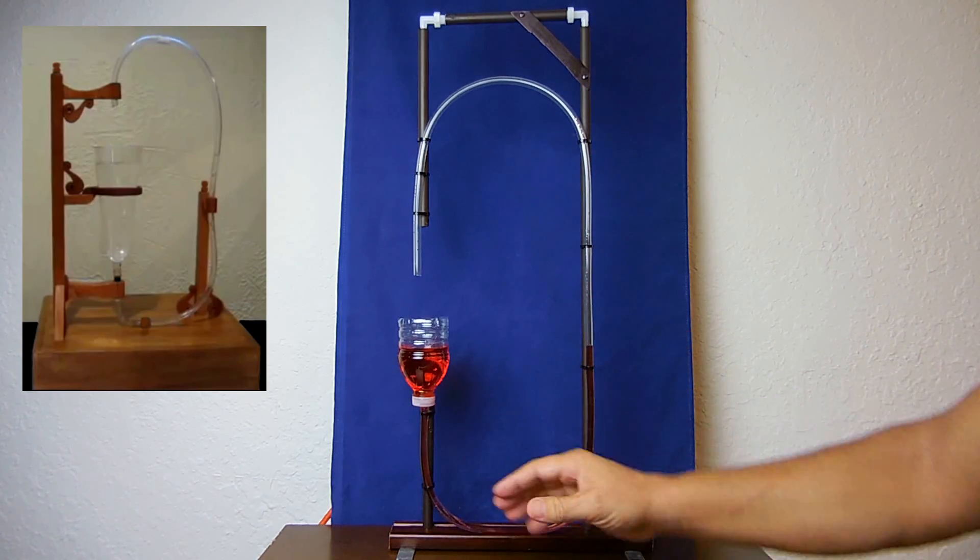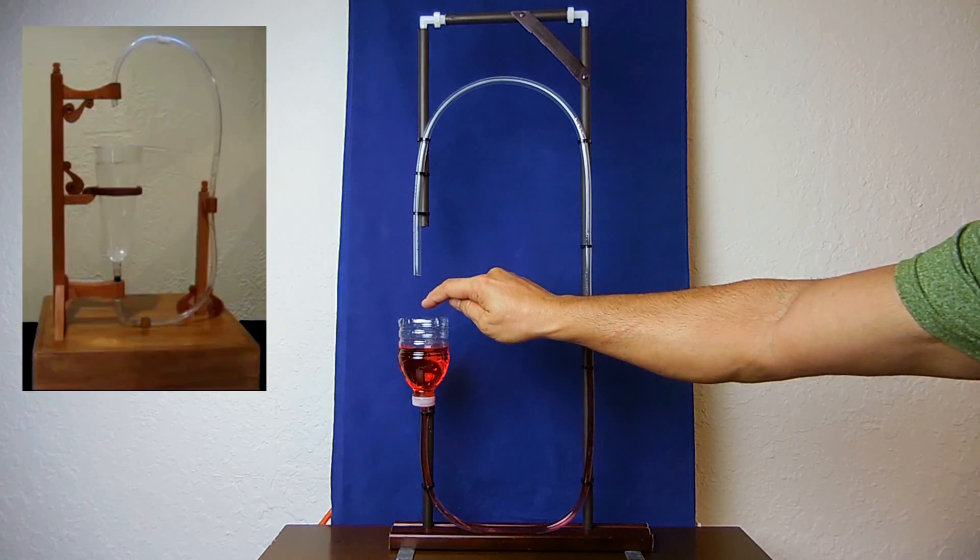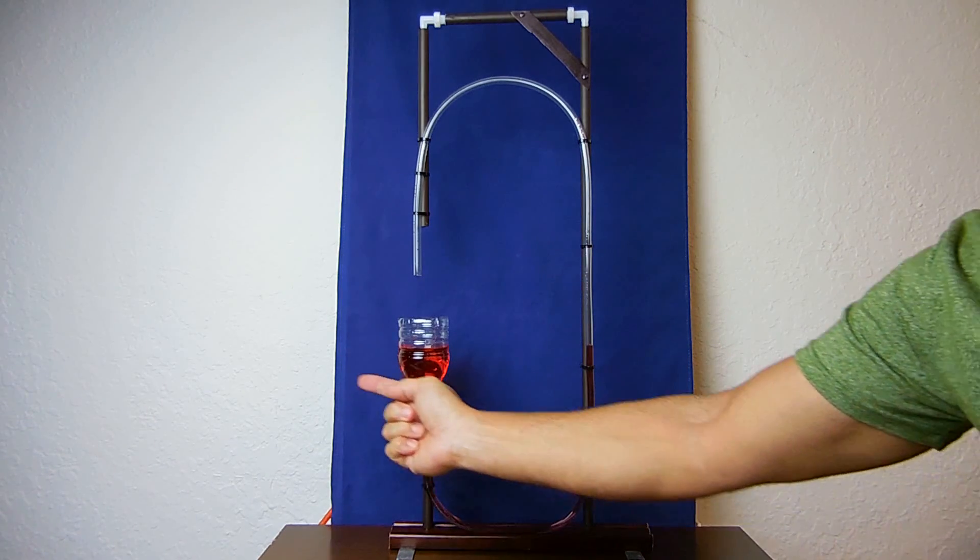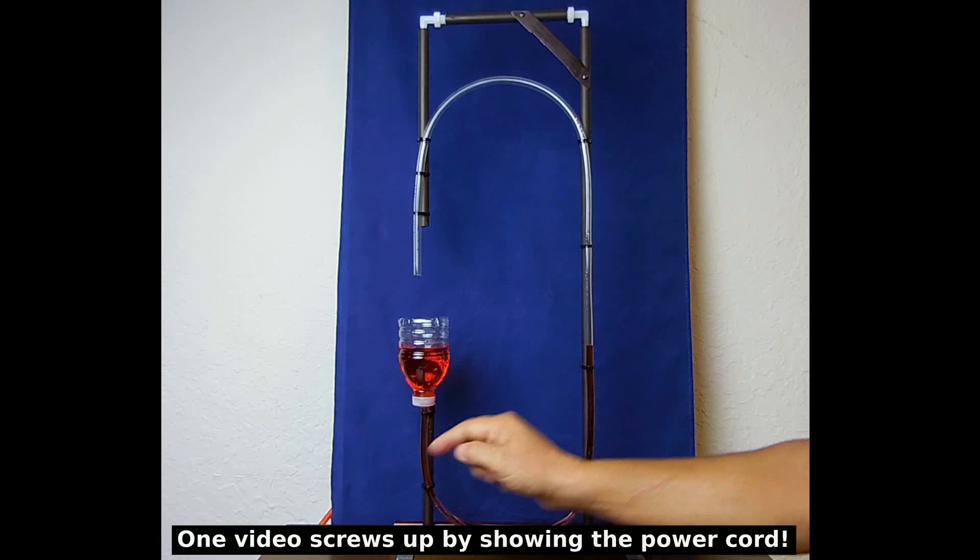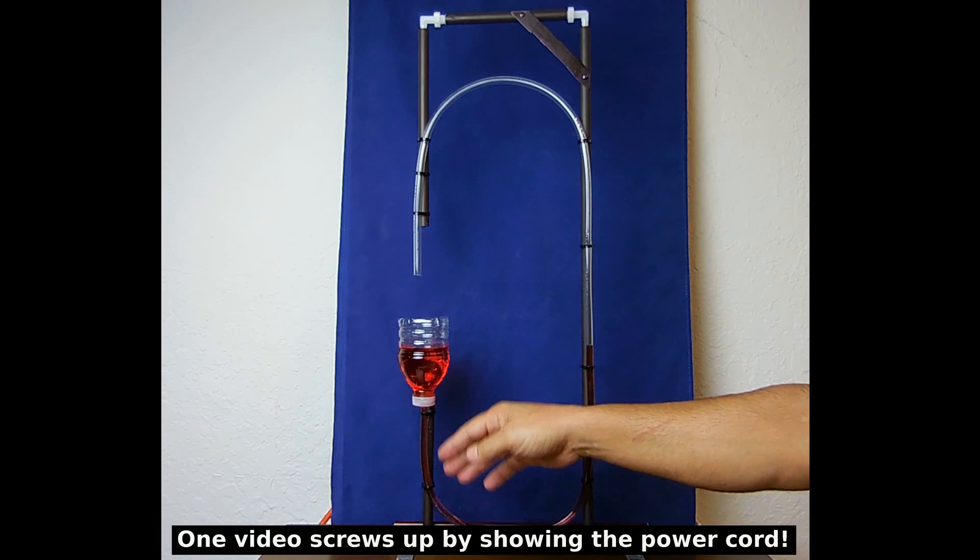What happens when you pour the liquid in? The pump is on already, you don't hear it. It gets drawn in to the pump, then the pump pushes it back and makes it look like the liquid flowed from the flask directly into the tube.